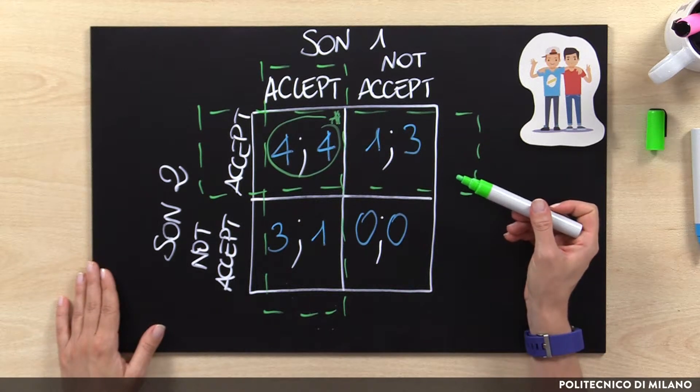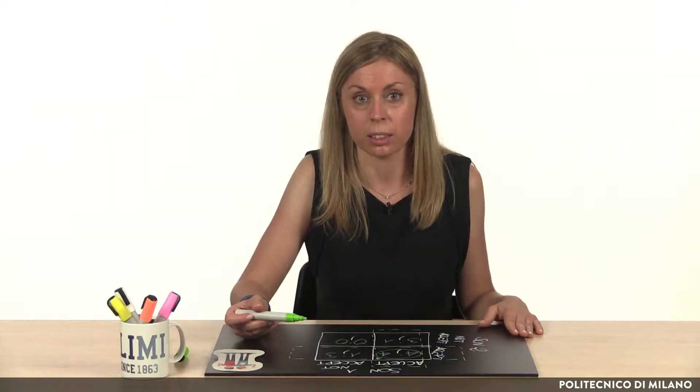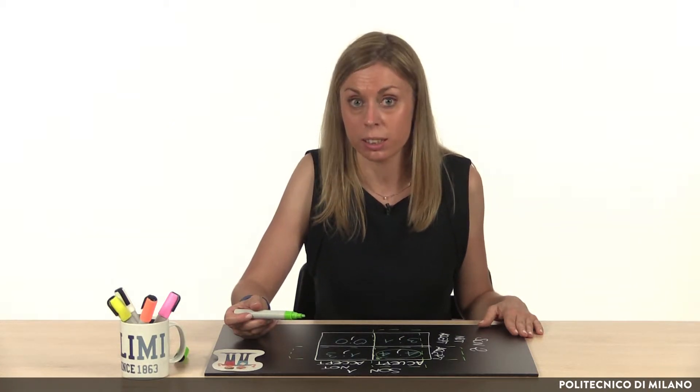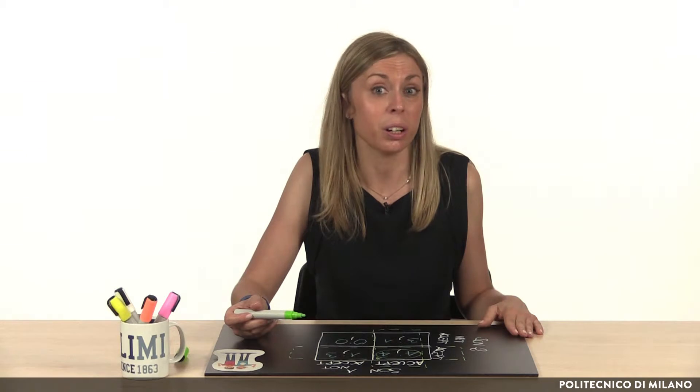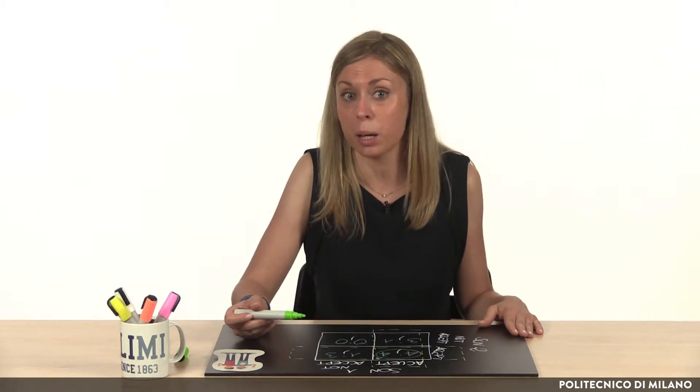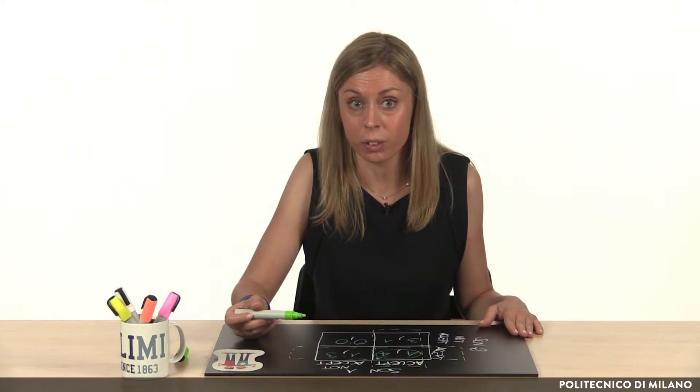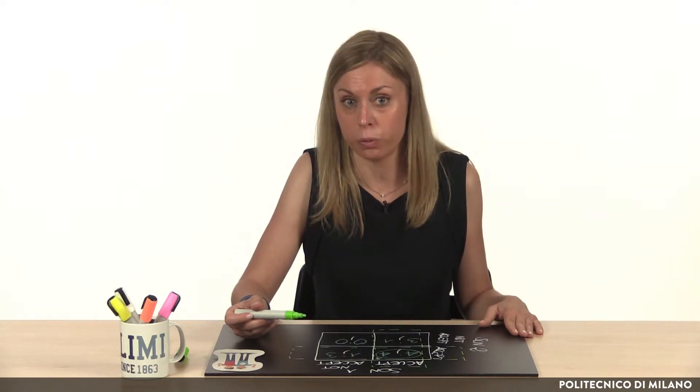Given this payoff matrix, we would expect that the two brothers will cooperate. Actually, sometimes between brothers, situations like these are not converging so easily. Sometimes the objective of the player is not just the rational one. Between brothers, for example, it might happen that each brother is more interested in receiving more than the other brother than in the overall money achieved.